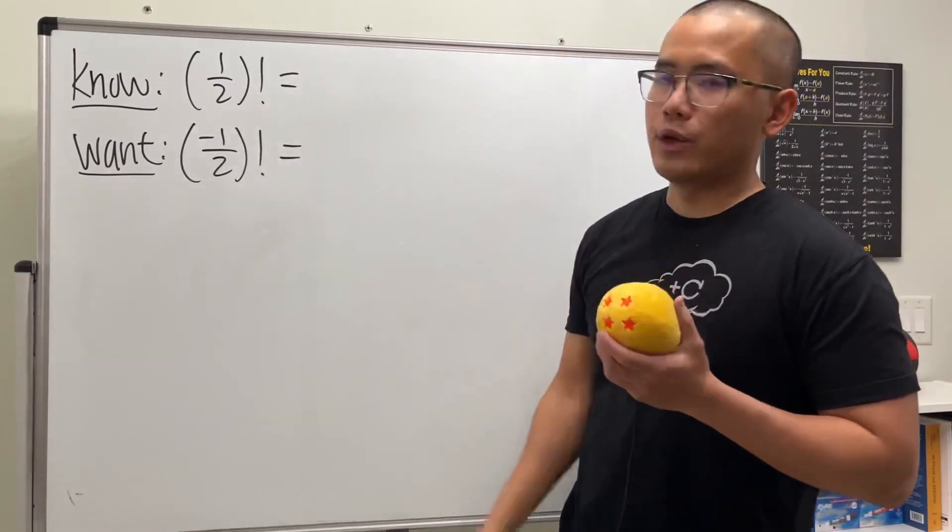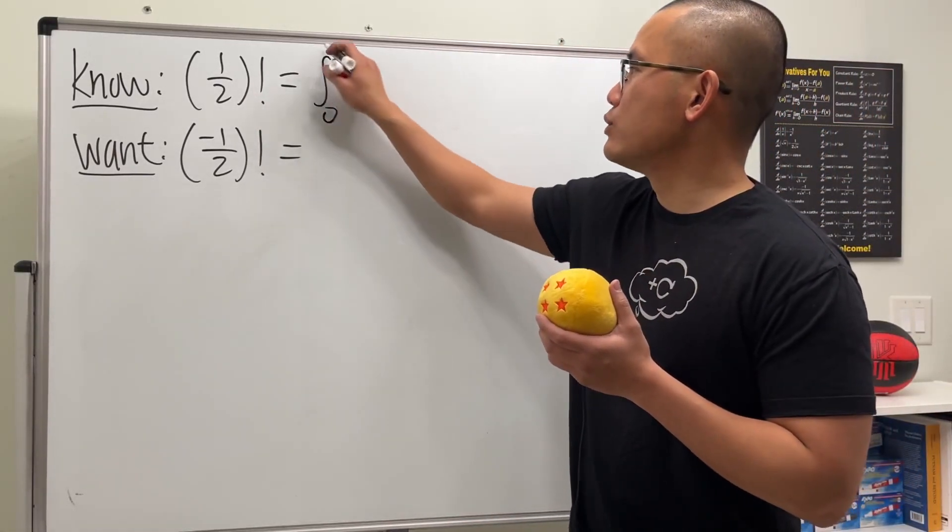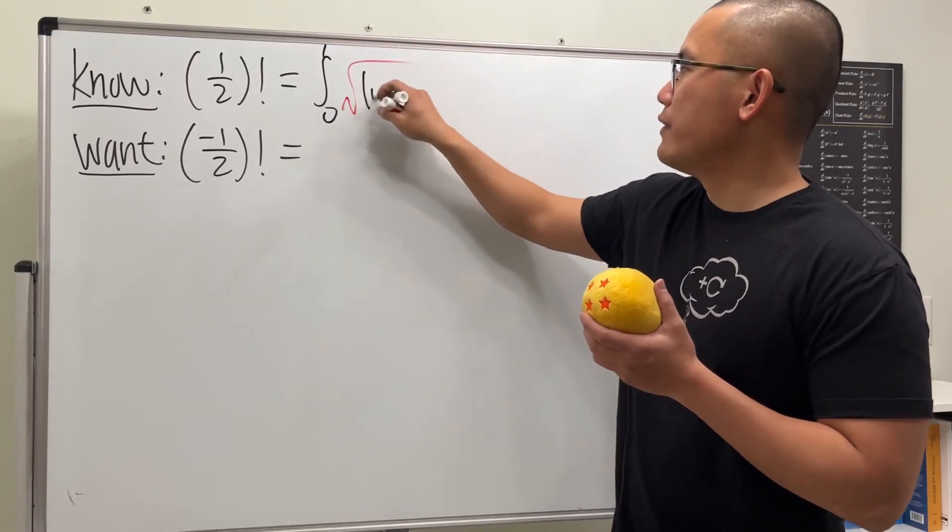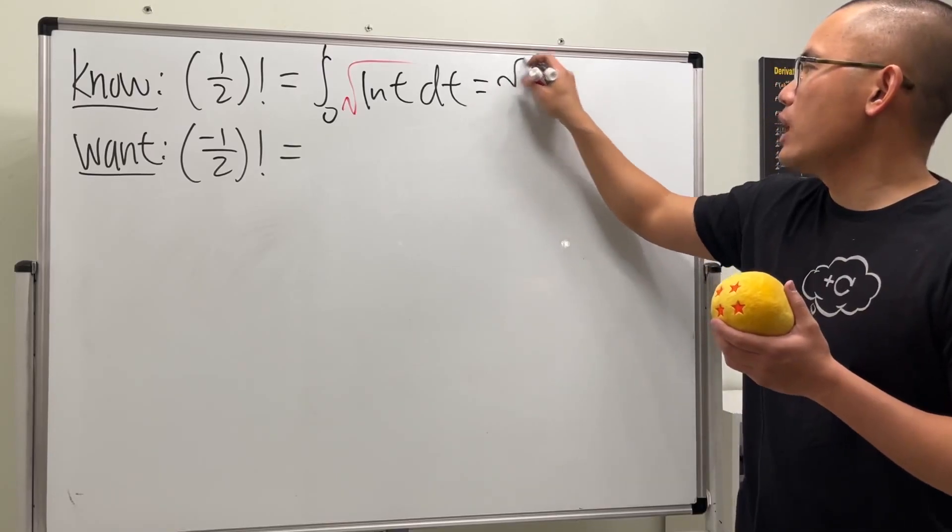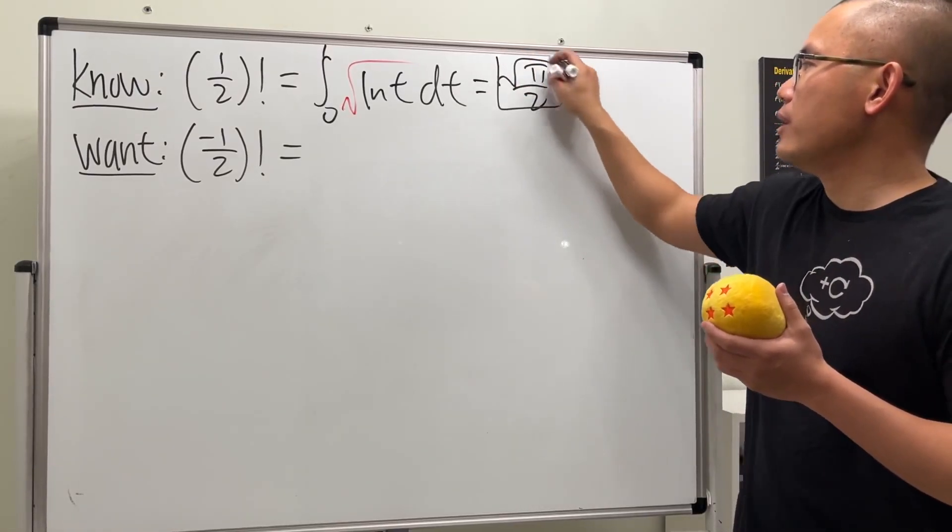Okay, as we all know, to calculate 1 half factorial, this right here is just the integral going from 0 to 1, and we have the square root, and we have ln t dt. And we can calculate this easily, and we will just get square root of pi over 2.